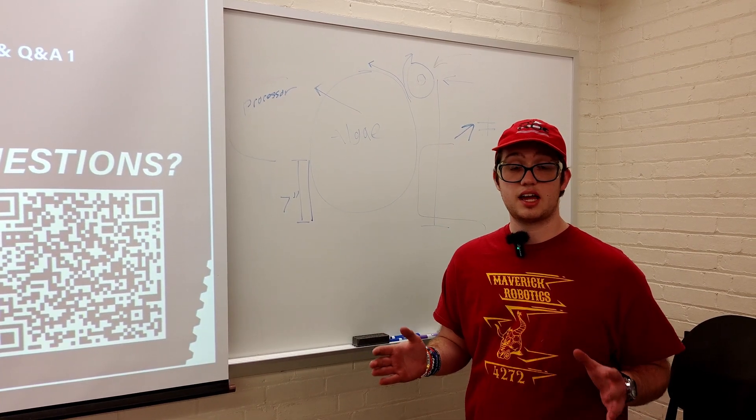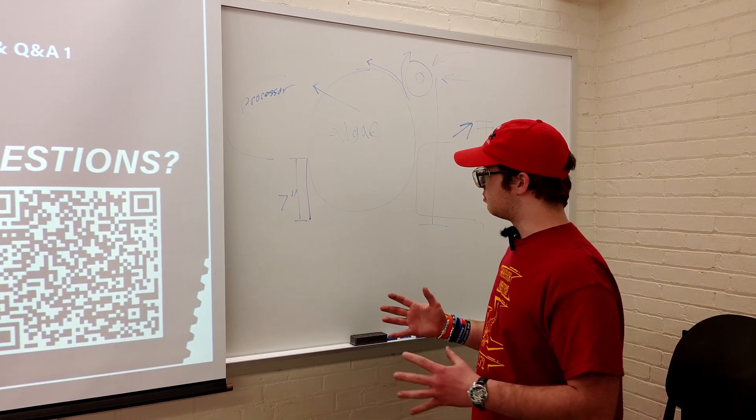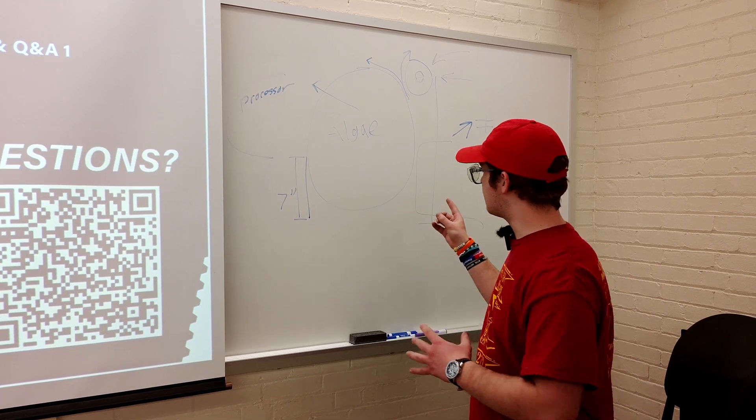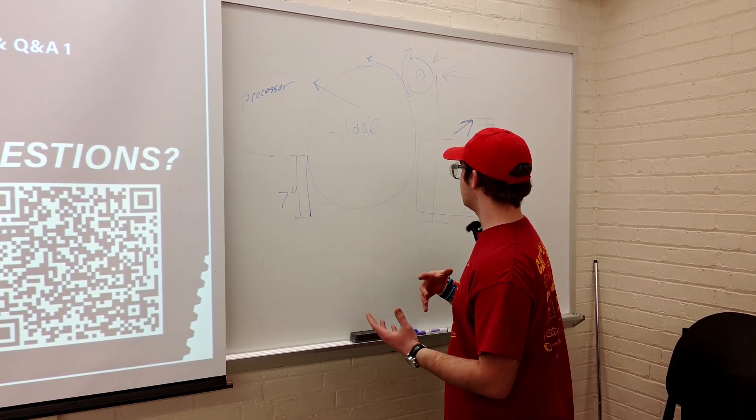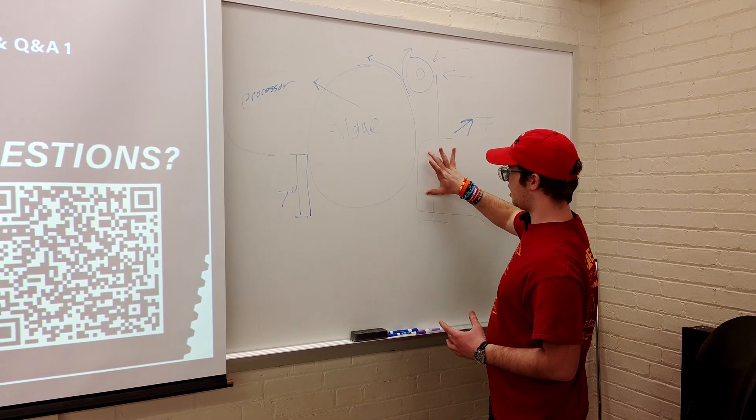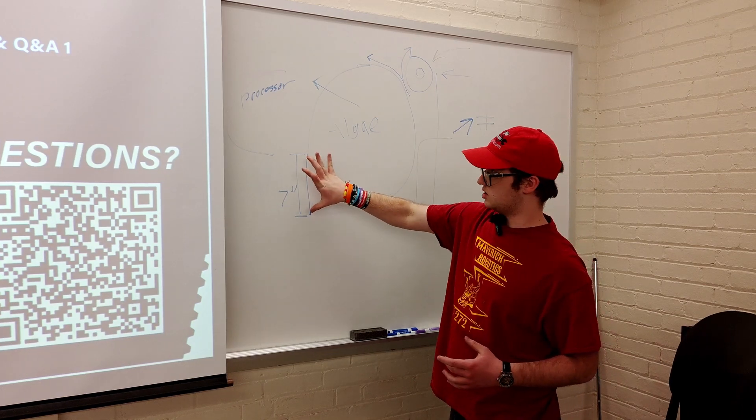So our idea is to basically corral the algae and then push it straight into the processor using this mechanism here. We've got the robot bumpers here, and then the edge of the processor.